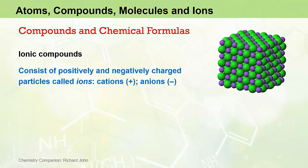Ionic compounds consist of positively charged and negatively charged particles called ions. Positively charged ions are called cations. Negatively charged ions are called anions.